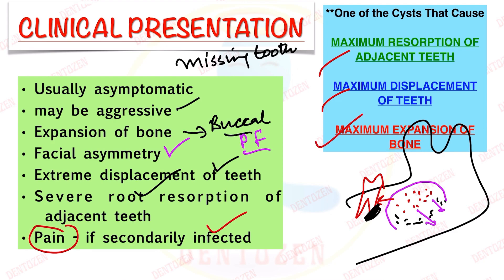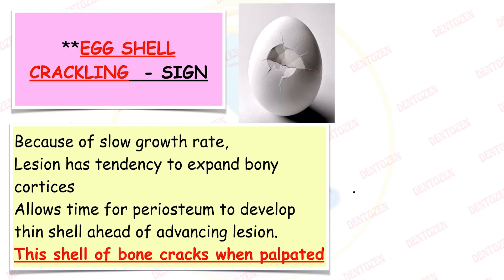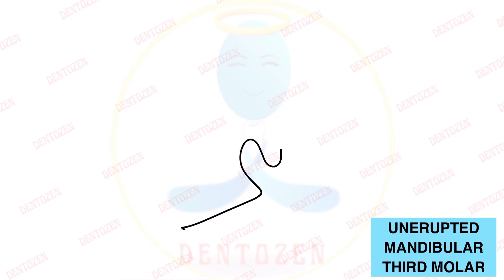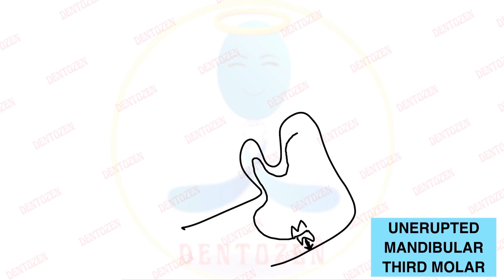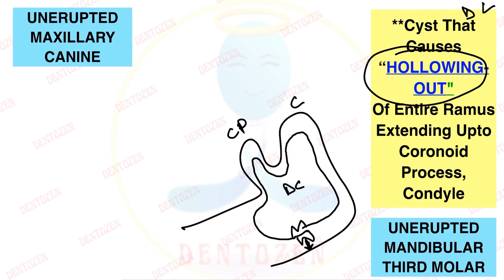This is the cyst that causes maximum resorption of adjacent teeth, maximum displacement of teeth, and maximum expansion of bone — an entrance question. An important clinical sign is egg-shell cracking: the cyst grows slowly, the periosteum tries to repair it by laying down a thin shell of bone at the advancing lesion. When palpated, this shell cracks — that is the egg-shell cracking phenomenon. When associated with a mandibular third molar, it can push the tooth toward the inferior border, extending up to the coronoid process and condyle — called the hollowing-out effect.